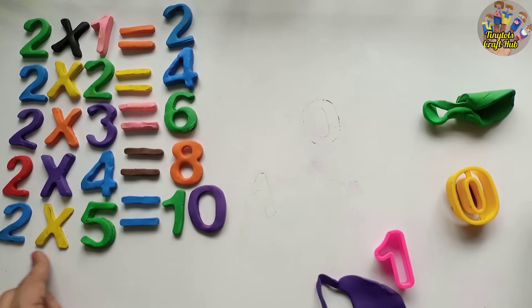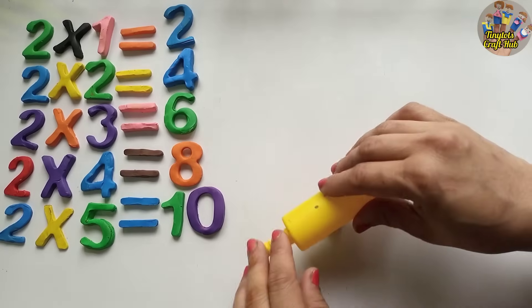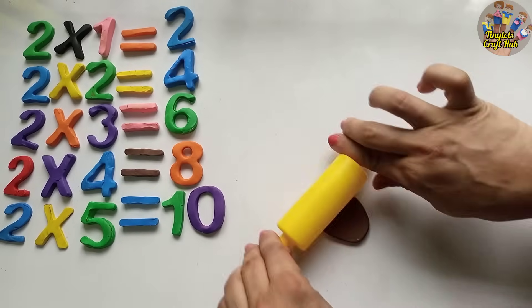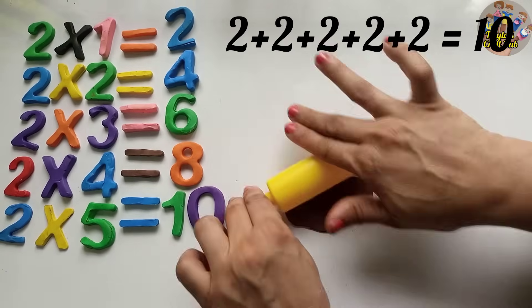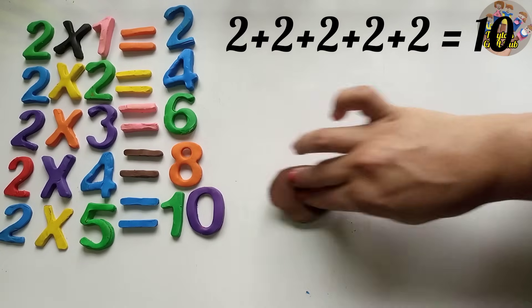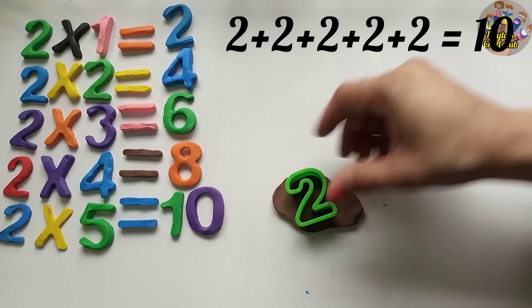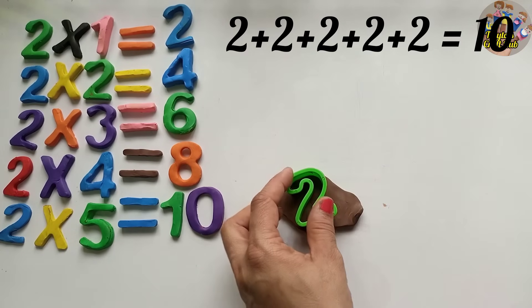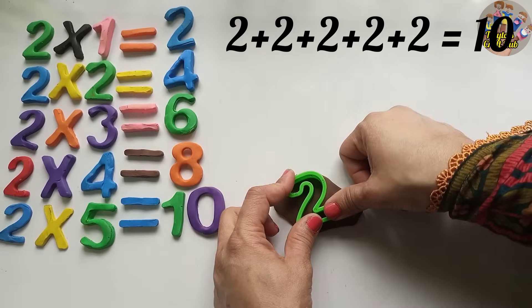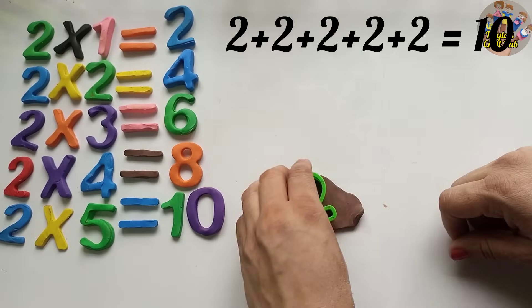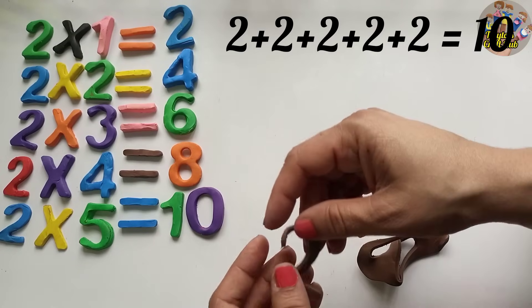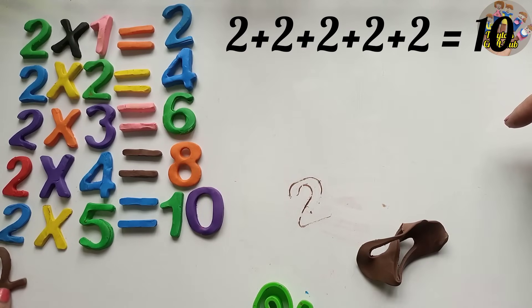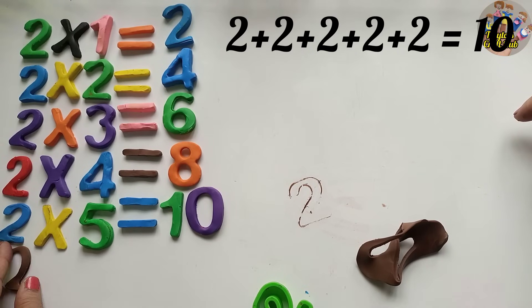When you multiply two five times, and when you add two five times, do you know what the answer is? Yes, it's ten! So two fives are ten. Two plus two plus two plus two plus two equals ten.